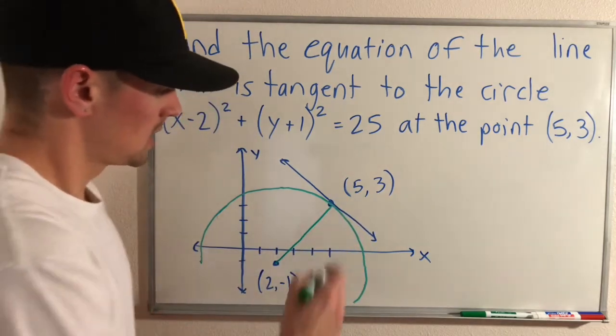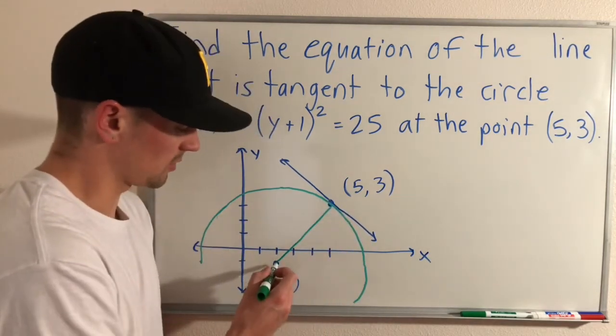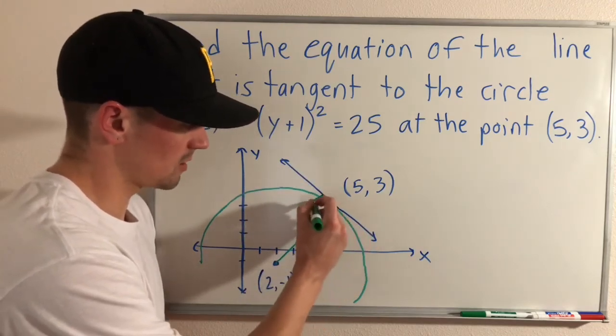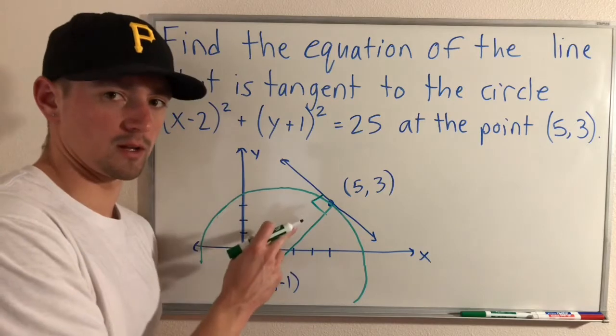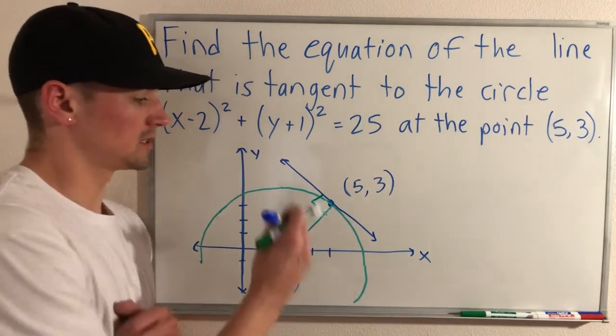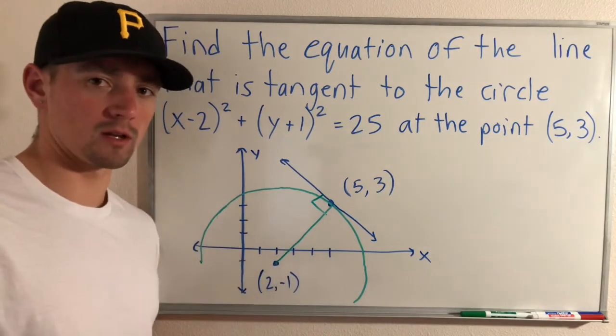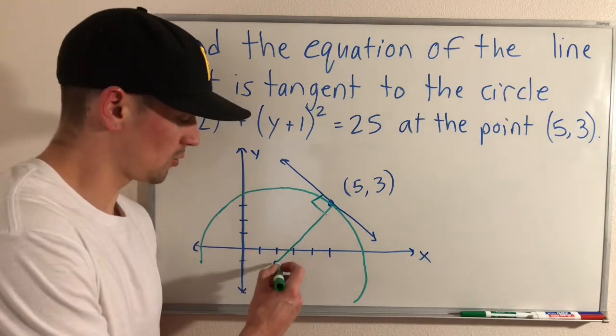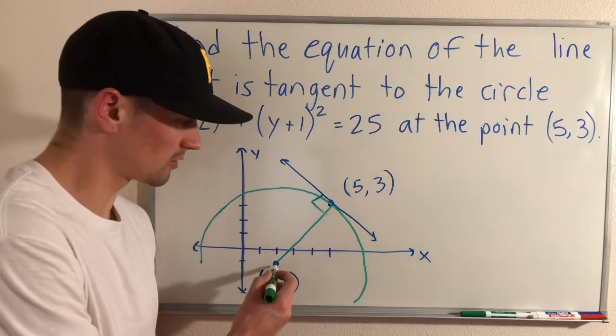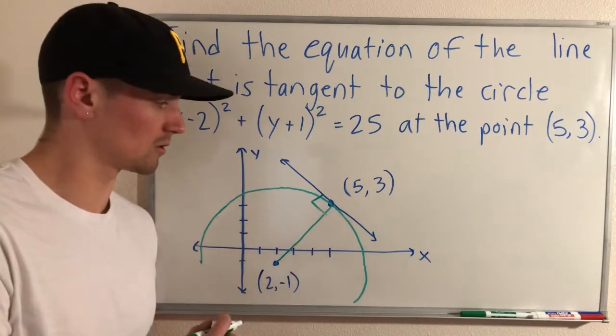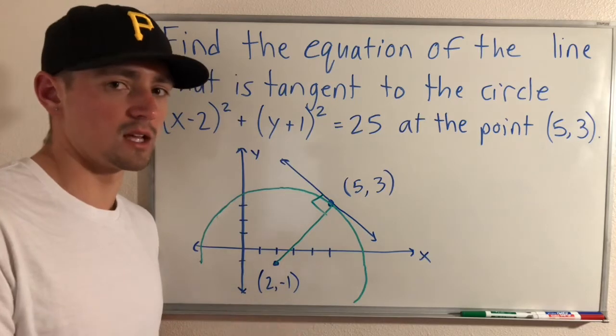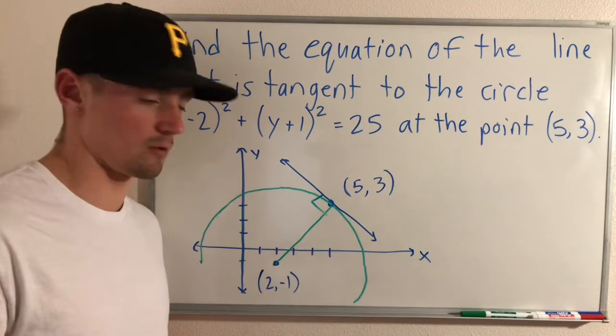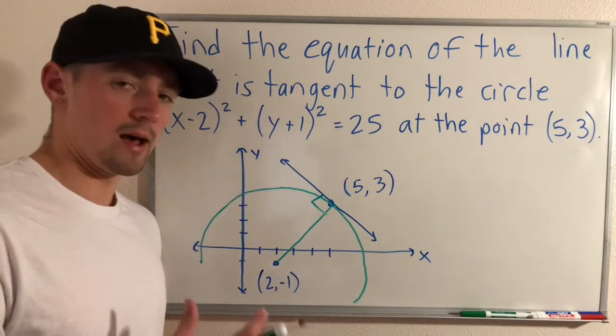If we look at this line, this line that goes from the center of the circle to the edge of the circle, if we compare it to this tangent line, we know that these lines are going to be perpendicular to each other. What that means is if you have two lines that are perpendicular, their slopes are negative reciprocals of each other. So if we can find the equation of this line that connects the center of our circle to this edge point of our circle, all we have to do is take the negative reciprocal of that line slope and that will be the slope of this tangent line that we're looking at. So how do you do that?